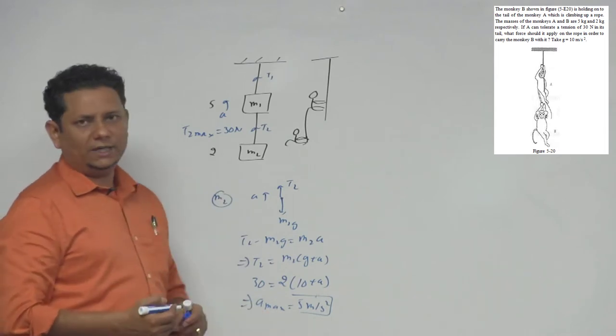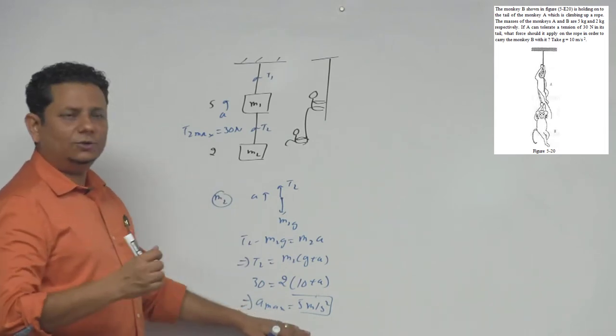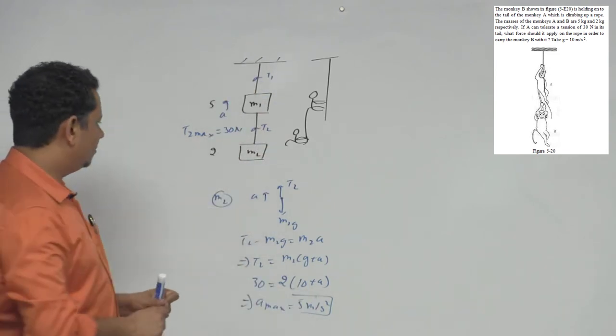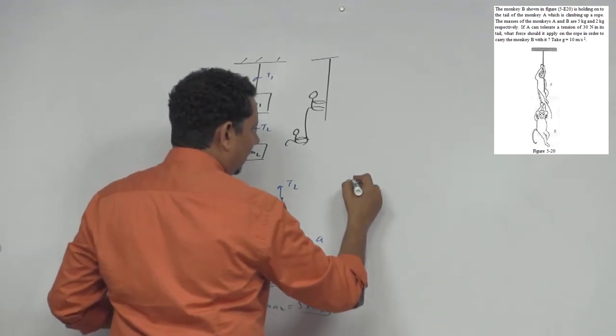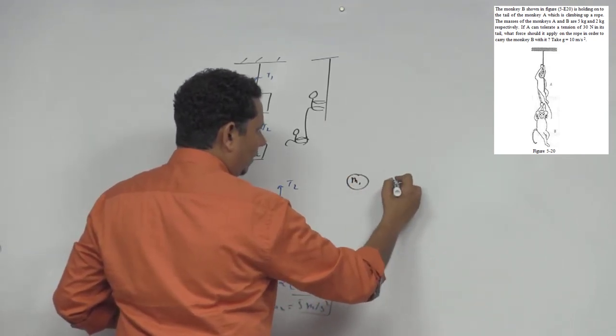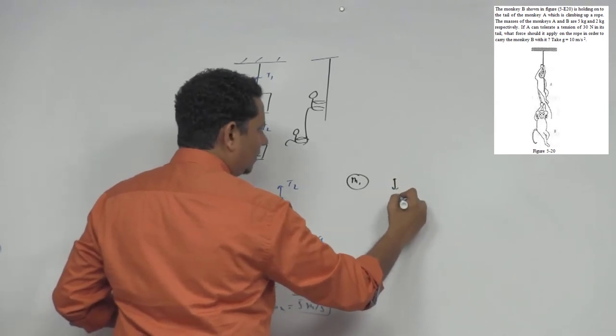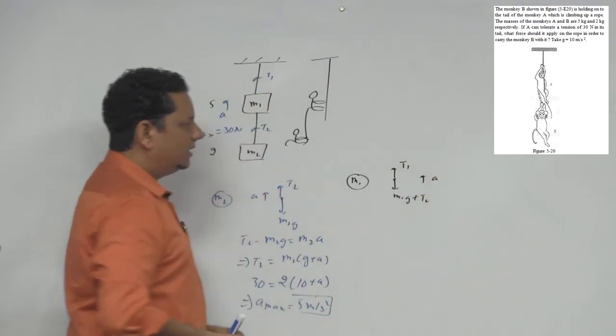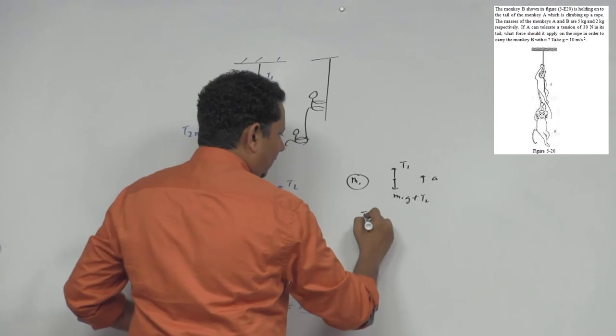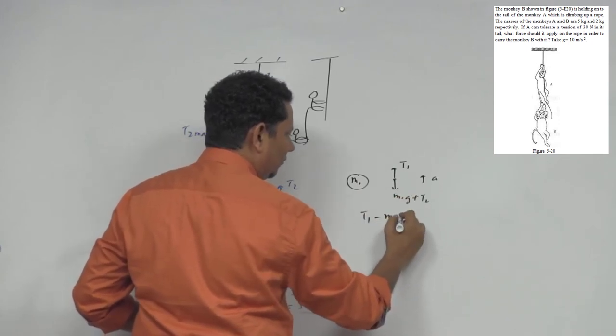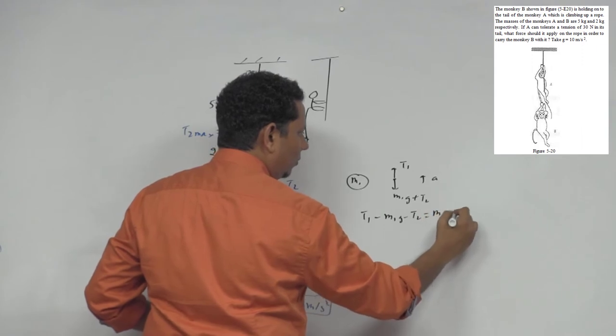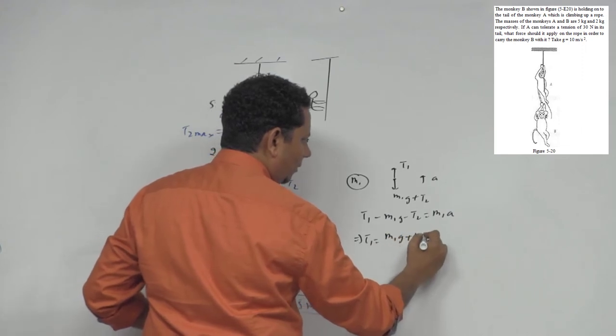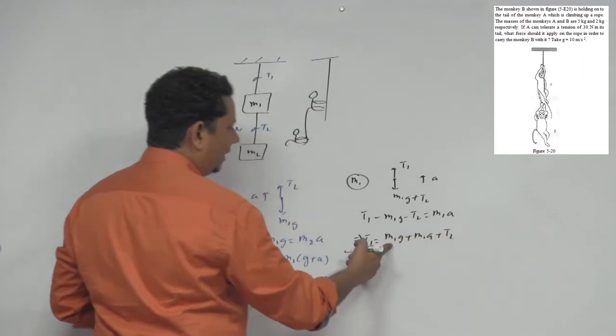So this case mein joh aapka t2 ki value maximum hojaegi. Now agar aapka acceleration joh a manki a aur b ka, joh acceleration woh agar 5 meter per second square hai, us case mein t1 ki value kya aati hai. Uske lihe hum m1 ka fbd bana leate hai. So yeh aapka m1 hai. Uska joh aap fbd banayenge, so niche aapka force lag raha hai m1g plus t2, aur upar aapka force lag raha hai t1, aur yoh pura system a acceleration se oopar jaa raha hai. So is case mein joh aapka t1 hai, t1 minus m1g minus t2 will be equal to m1 a, yeh equation am liqh sakta hai, which implies aapka t1 joh hai, woh aajayega m1g plus m1a plus t2.